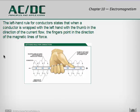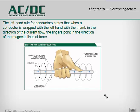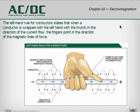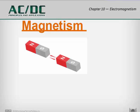On this slide we see the left-hand rule for conductors. This shows us that we can determine the direction of the rotation of the magnetic field, which will be important when we get further into motors. Using the left-hand rule, when your thumb is pointing in the direction of current flow, your fingers will wrap around the wire in the direction of the magnetic field's rotation. To understand electromagnetism fully, we must first take a closer look at magnetism itself.